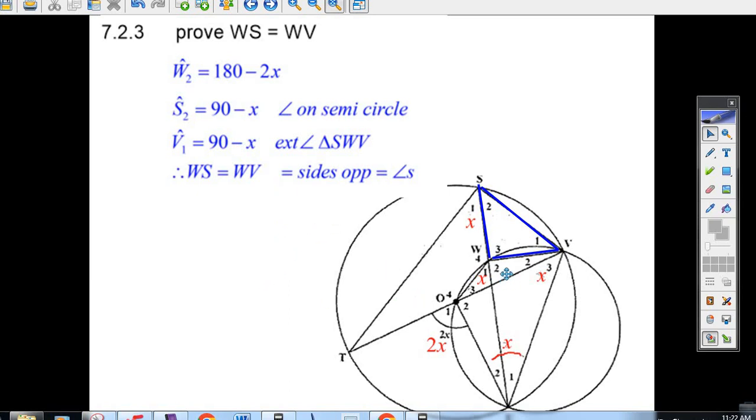I didn't have enough space to put in 180 minus 2x here. It would have got kind of cramped. But that's 90 minus x. That's 90 minus x. That's what makes those two sides equal. And there's that question done.